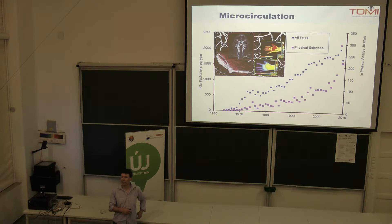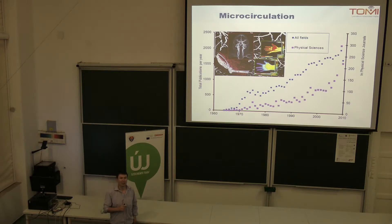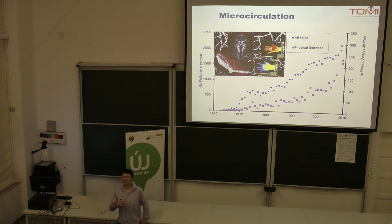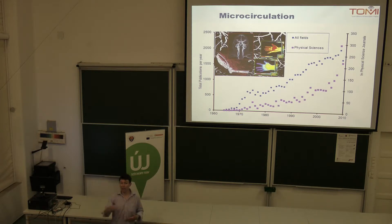Does anybody know why it would suddenly take off in the 1970s? What happened in the 1970s? Lasers? Laser was invented in the early 1960s, yes, but they weren't using lasers yet for microcirculation imaging. TV became popular — the ability to record video — and therefore, from frame to frame, look at the movement of cells within tissues, so you could actually get a velocity of flow.